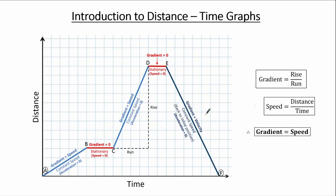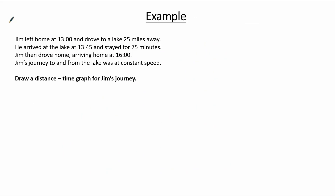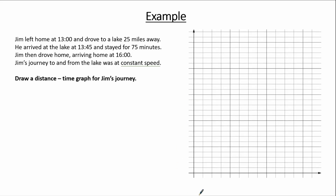Now that we have given meaning to this distance-time graph, we can use what we have learned to have a go at some questions. In this example: Jim left home at 13:00 and drove to a lake 25 miles away. He arrived at the lake at 13:45 and stayed for 75 minutes. Jim then drove home, arriving at 16:00. Jim's journey to and from the lake was at constant speed, and we are asked to draw a distance-time graph for his journey. Since the journeys were at constant speed, the graphs will be linear.